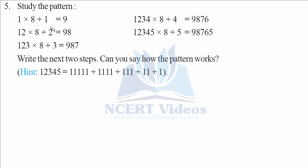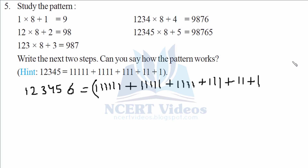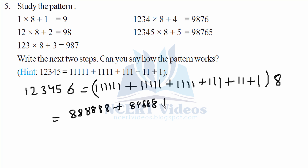Question five: study the pattern and write the next two steps. The hint shows 1 into 8 plus 1 is 9, then 12 into 8 plus 2 is 98. Each step appends the next digit and adds it. The pattern involves sequences of ones — 123456 ones — multiplied by 8, which equals six 8s plus five 8s and so on, giving 888888 plus 8888 plus 88 plus 8.